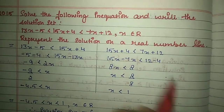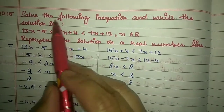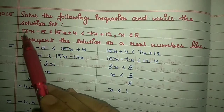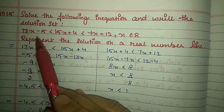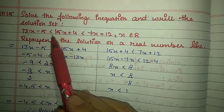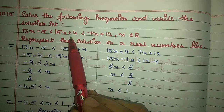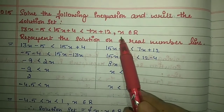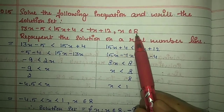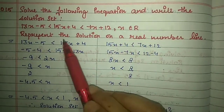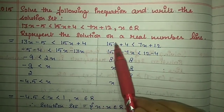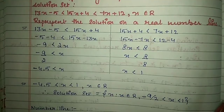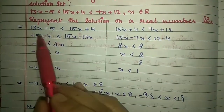Next question from 2015: solve the following inequation and write the solution set. 13x minus 5 < 15x + 4 < 7x + 12, where x belongs to real numbers. Represent the solution set on the real number line.